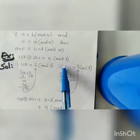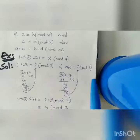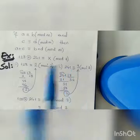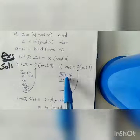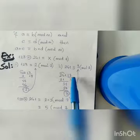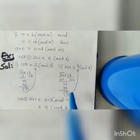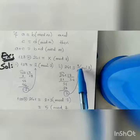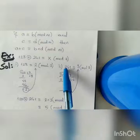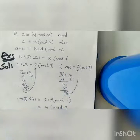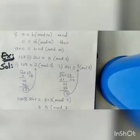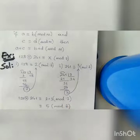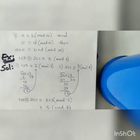Then we should find the equivalent number of 241 modulo 7. We divide 241 by 7 — 241 divided by 7 gives 34 with remainder 3. So 3 is the equivalent number of 241. Then we add these two remainders: 2 plus 3 gives 5. Since 5 is less than our modulus 7, it is our equivalent number, so the answer is x equals 5.